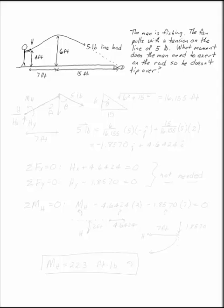The man is fishing. The fish pulls with a tension on the line of five pounds. What moment does the man need to exert on the rod so he doesn't tip over?